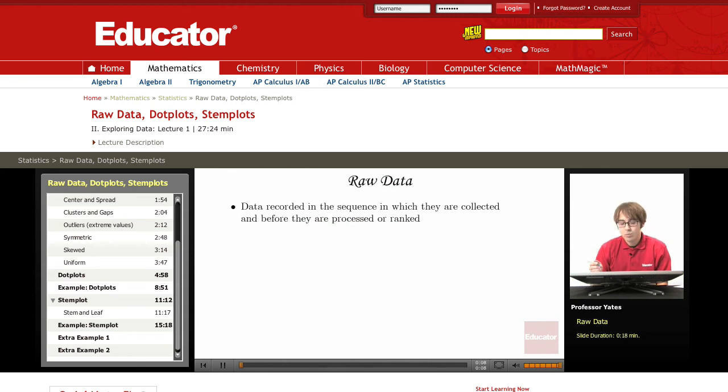What do we mean by raw data? Raw data is just data that's recorded in the sequence in which they are collected, before we do anything to the data, before it's even processed or ranked. Some books will call this ungrouped data.